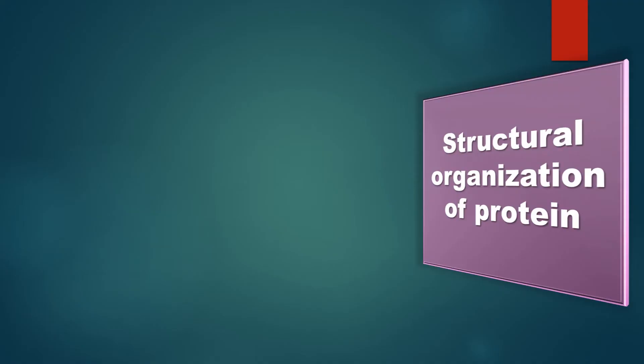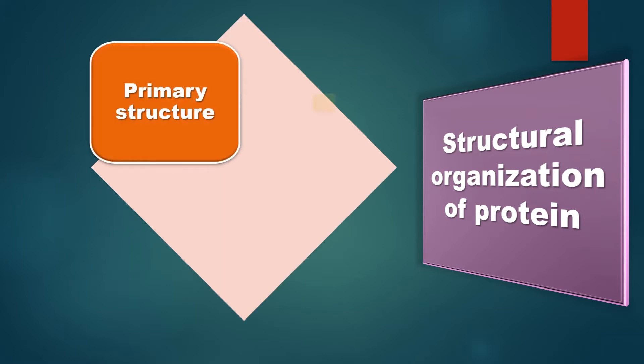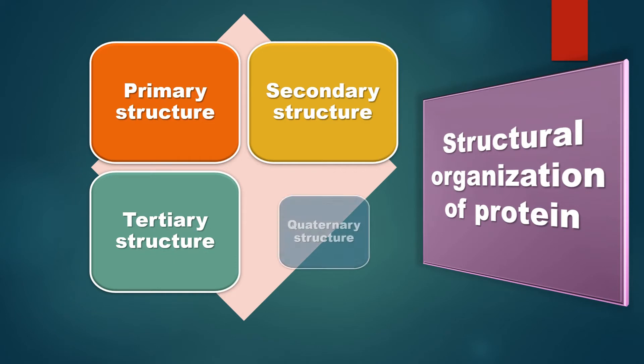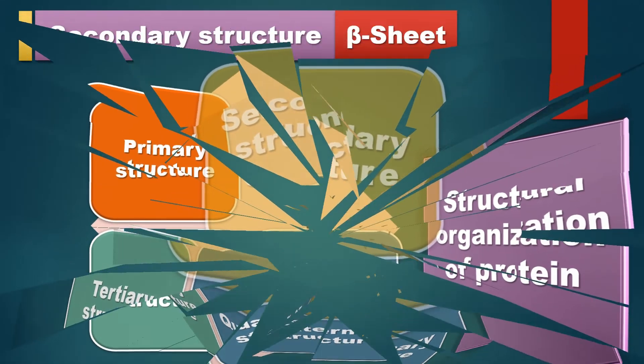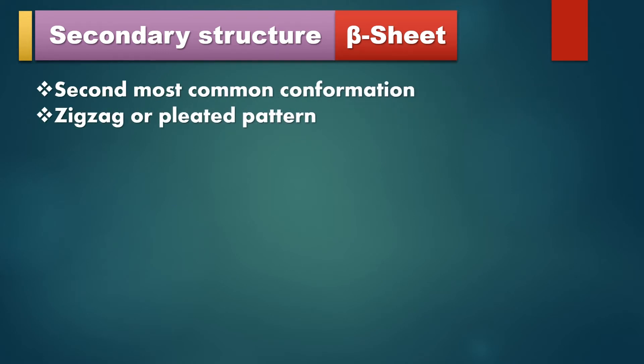As we know, the protein structural organization includes primary structure, secondary structure, tertiary structure, and quaternary structure. Today we are going to study another secondary structure — the beta sheet, also known as beta pleated sheet. This beta pleated sheet is the second most common conformation after alpha helix. Pauling and Corey discovered alpha helix first and later discovered this beta sheet, hence they gave it the name beta sheet.